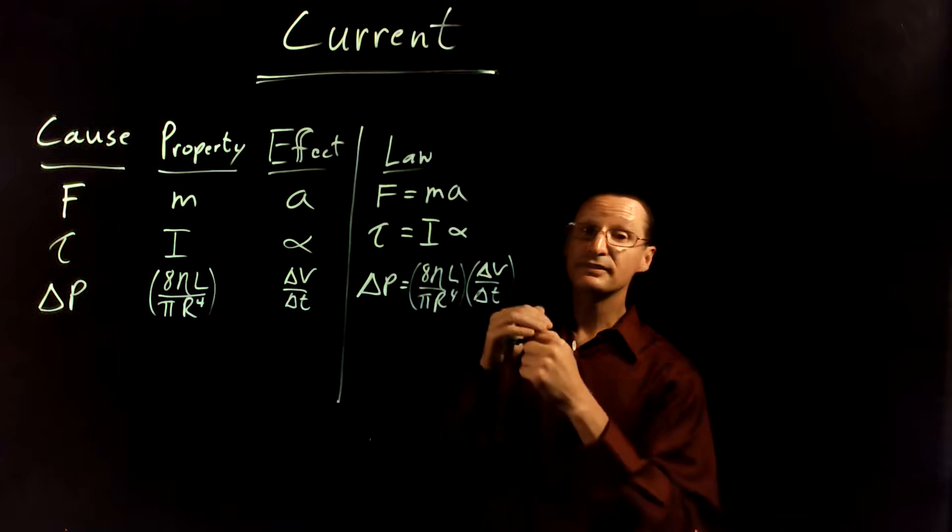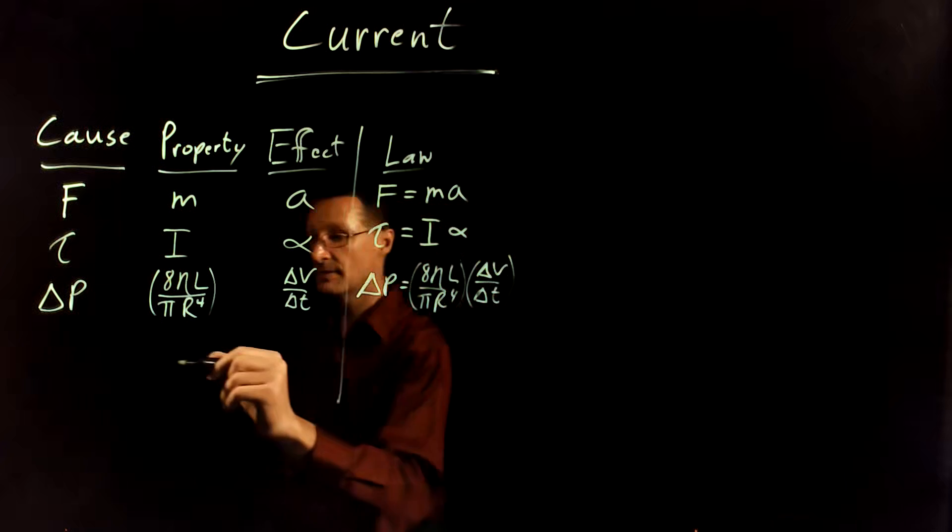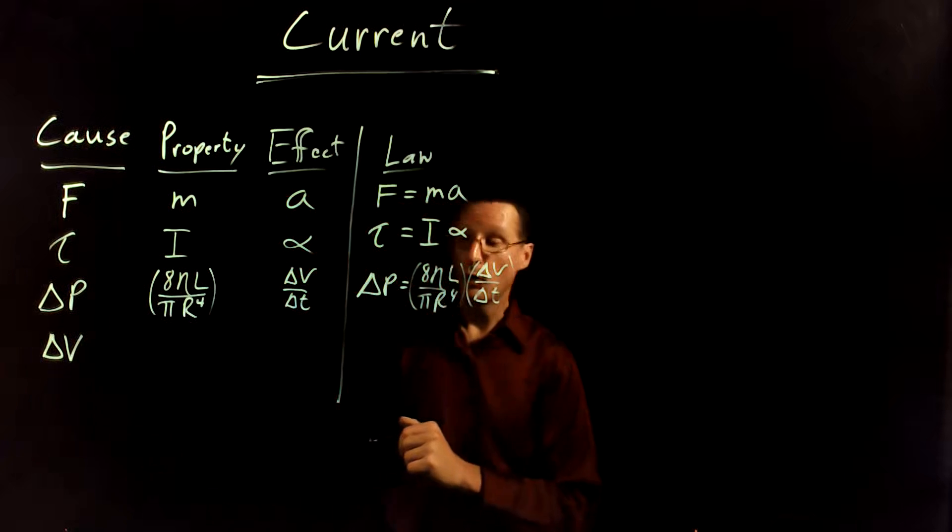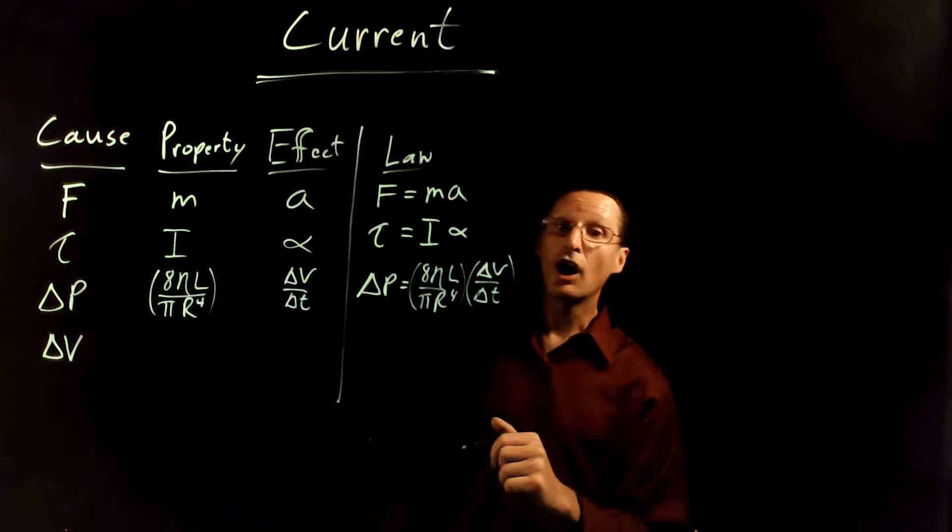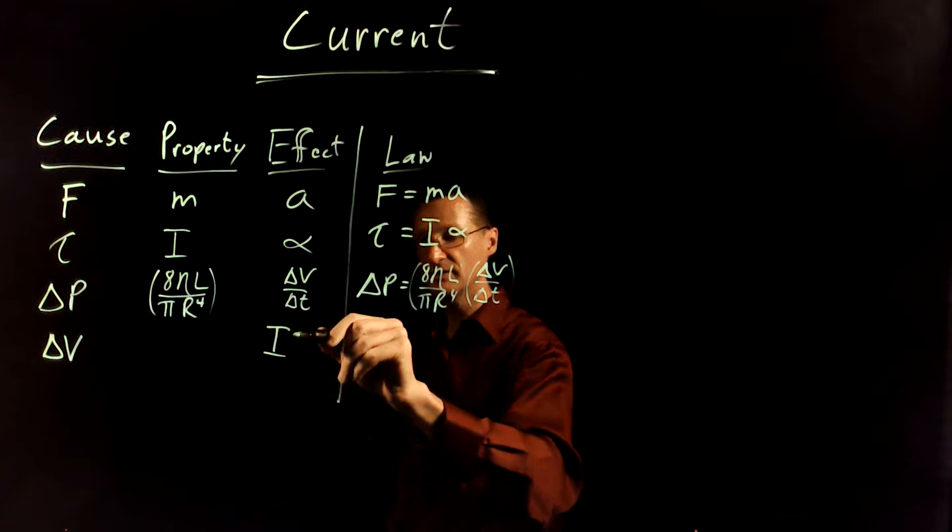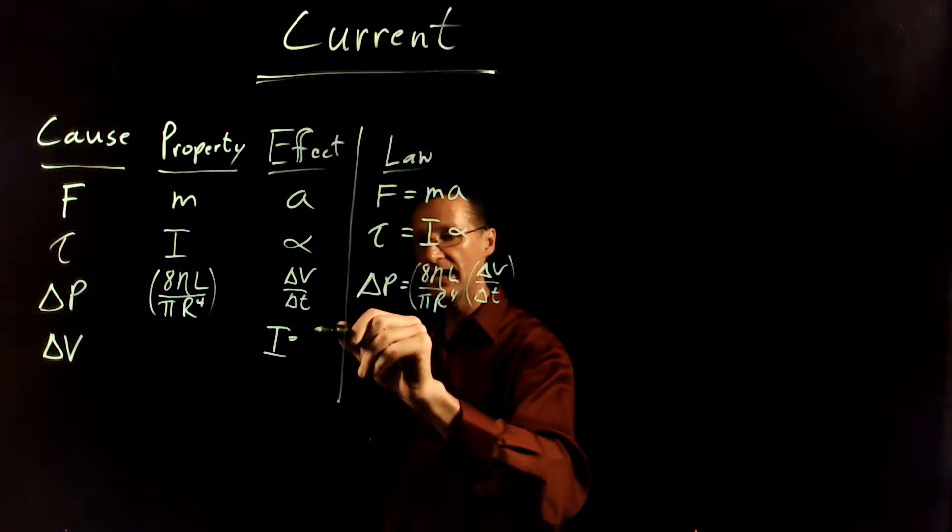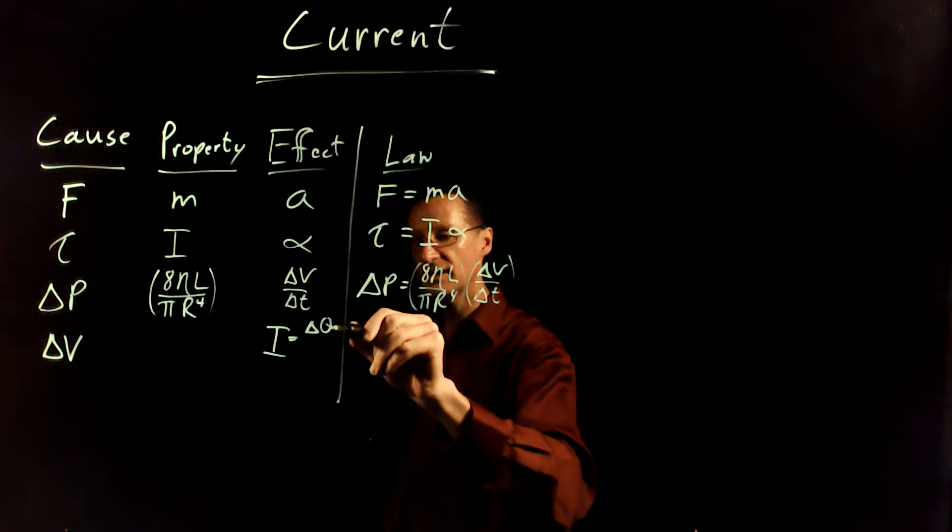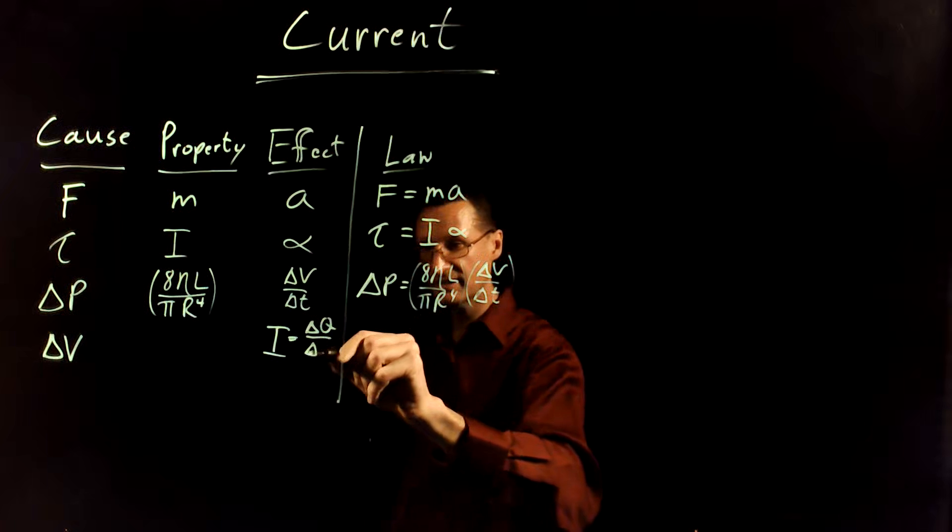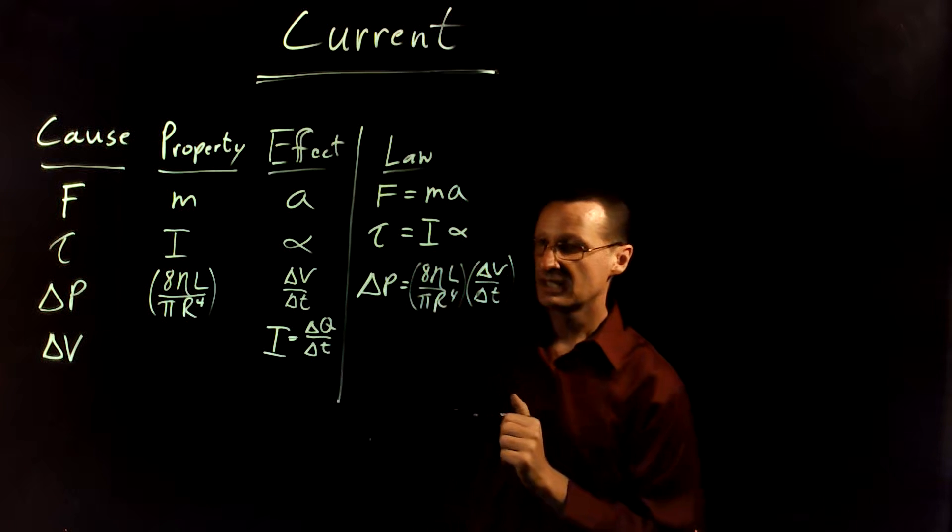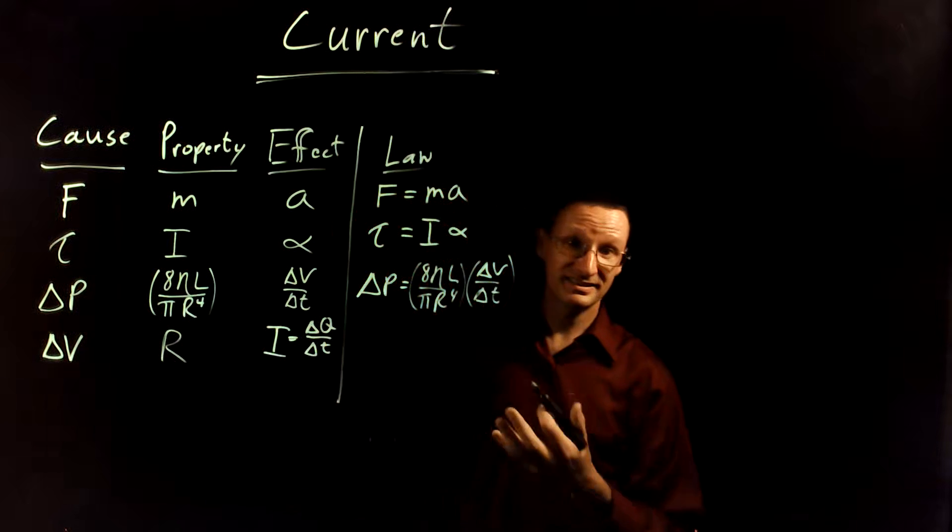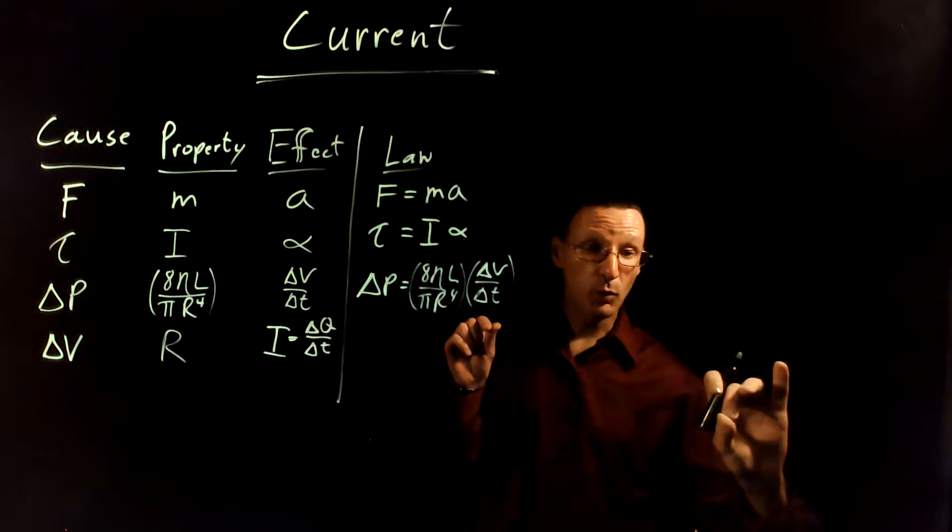We're going to have another one here for current, electric current. This tells us that a difference in potential or a voltage difference causes current. We use the letter I for that, and that is an amount of charge passing a certain point per time.